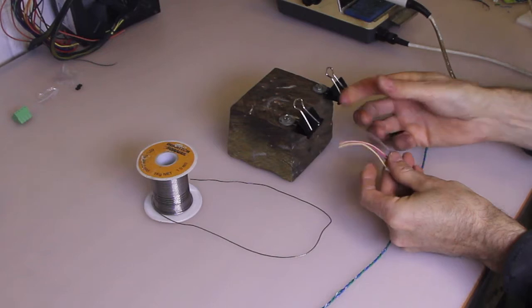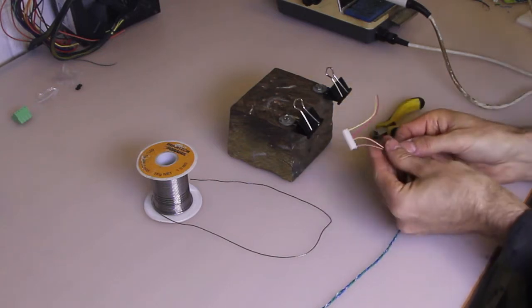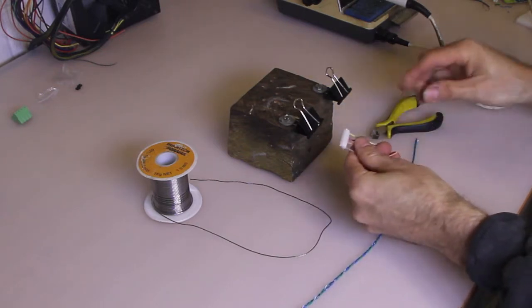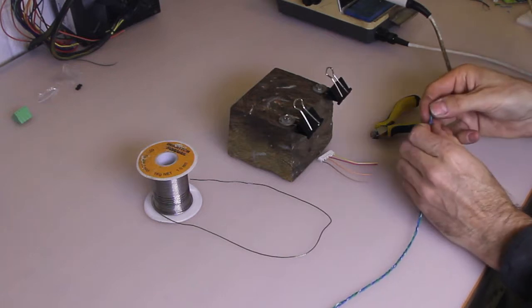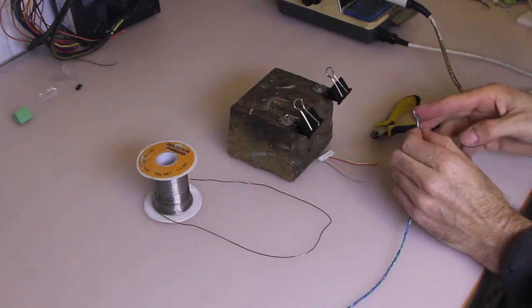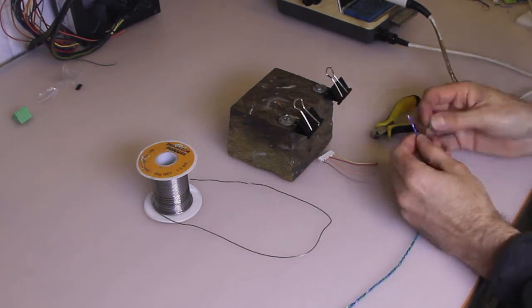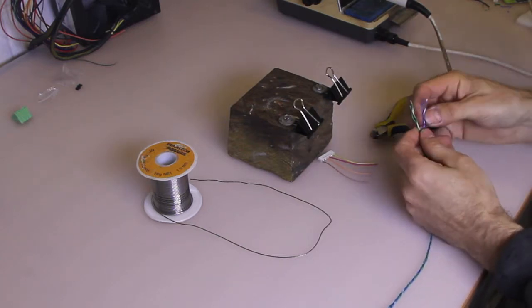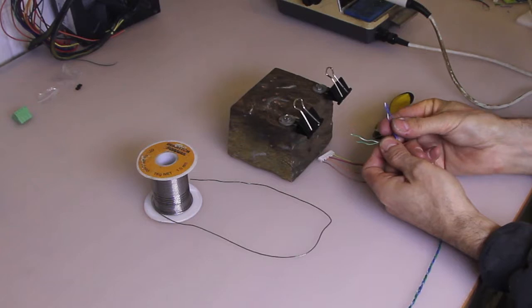So we've got our four wires set up now. That's going to be one coil and that's the other coil. So we're just going to separate our other wires a little bit so we can access them. One coil, the other coil.